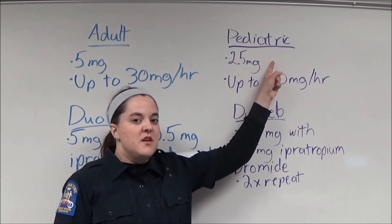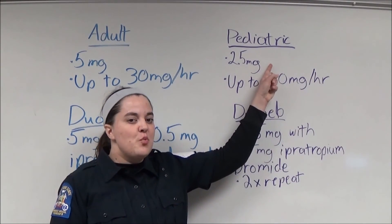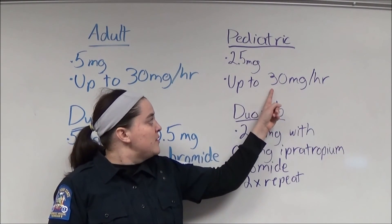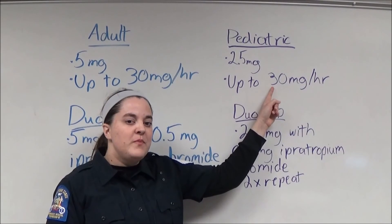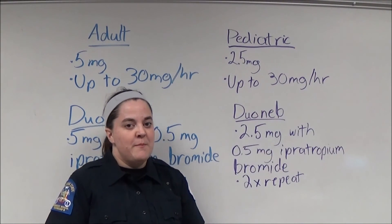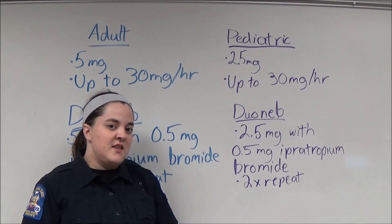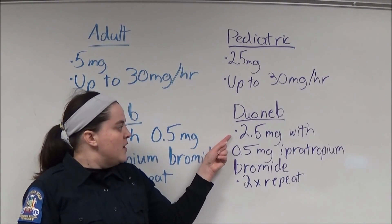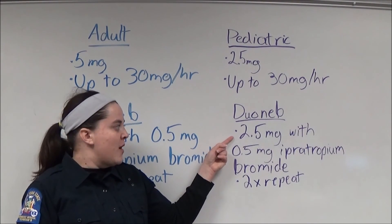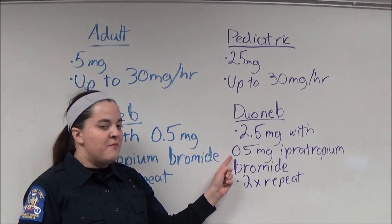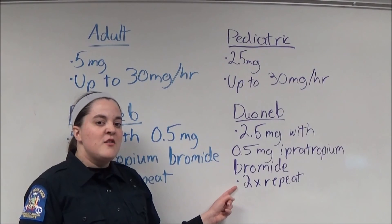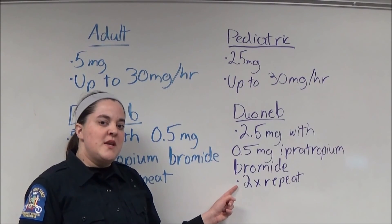Pediatric patients receive 2.5 mg of albuterol, up to 30 mg in an hour. Pediatric patients may also receive a Duoneb, though their dose is slightly different: 2.5 mg with 0.5 mg of ipratropium bromide, and that dose can be repeated two times.